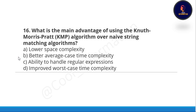Next question: what is the main advantage of using the Knuth-Morris-Pratt algorithm over a naive string matching algorithm? Option A is lower space complexity, option B is better space-time complexity, option C is ability to handle regular expressions, option D is improved worst-case time complexity. Correct option is D — improved worst-case time complexity. This is a very important question.